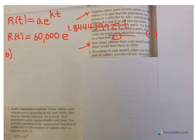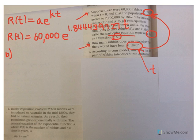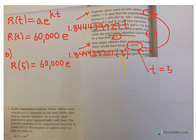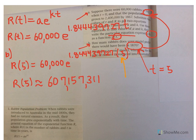Now part b: how many rabbits does your model predict there would have been in 1870? 1870 is 5 years after 1865, and t equals 0 represents 1865, so 5 years after that is t equals 5. We substitute 5 for t in our model and use a calculator to evaluate. We get r of 5 is approximately equal to 607,157,311.